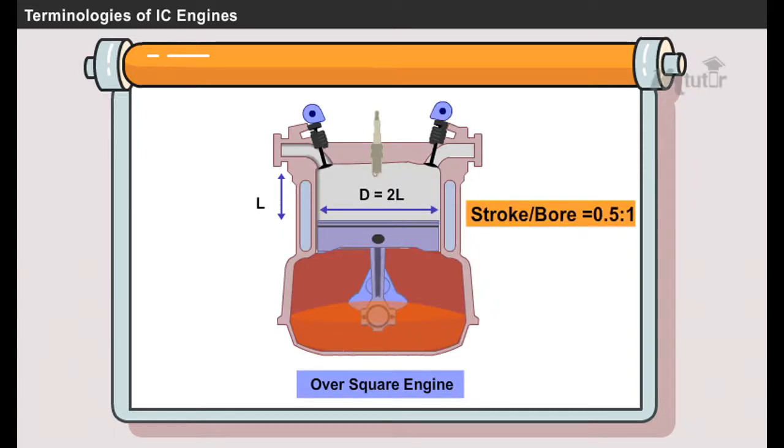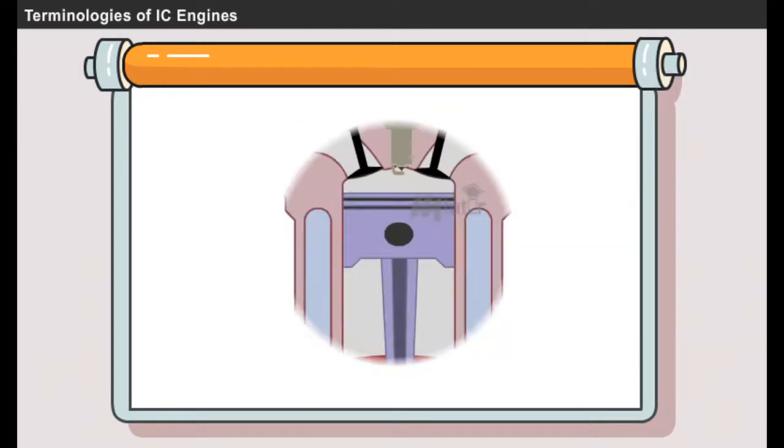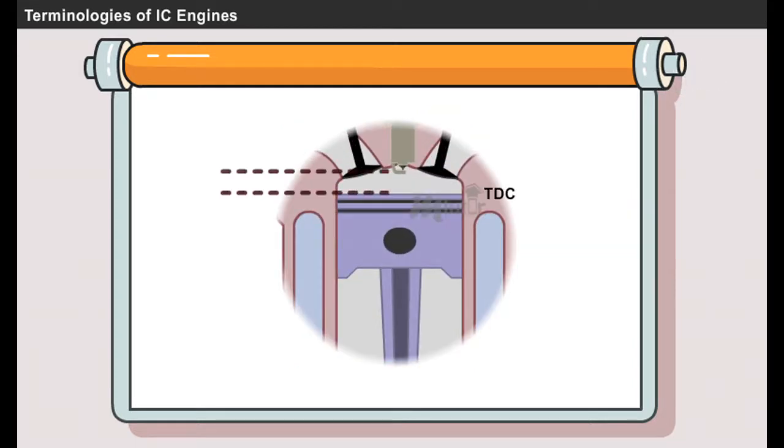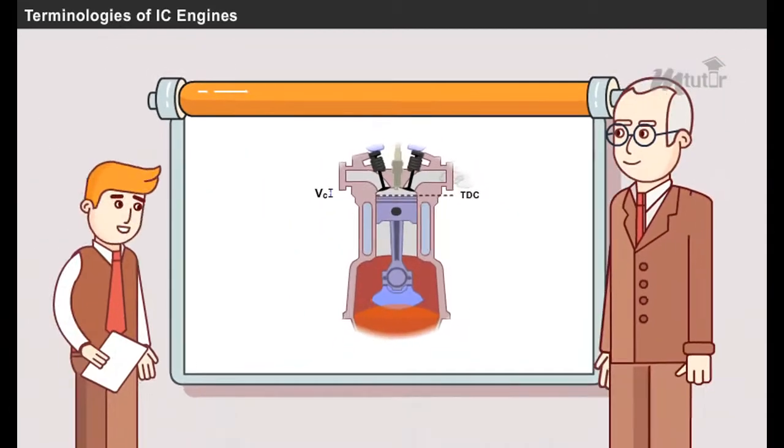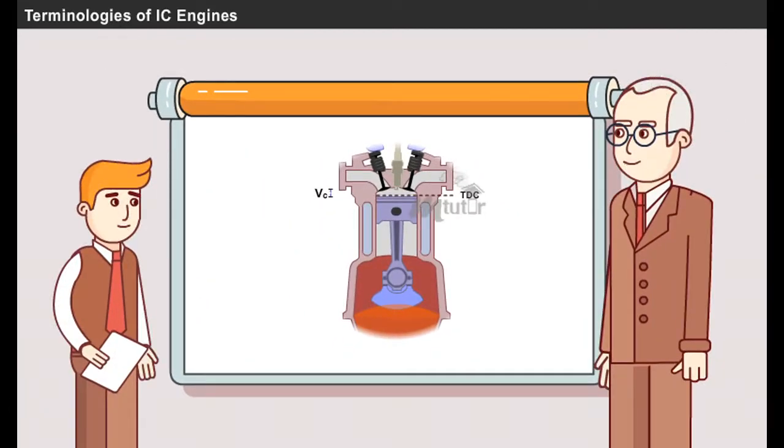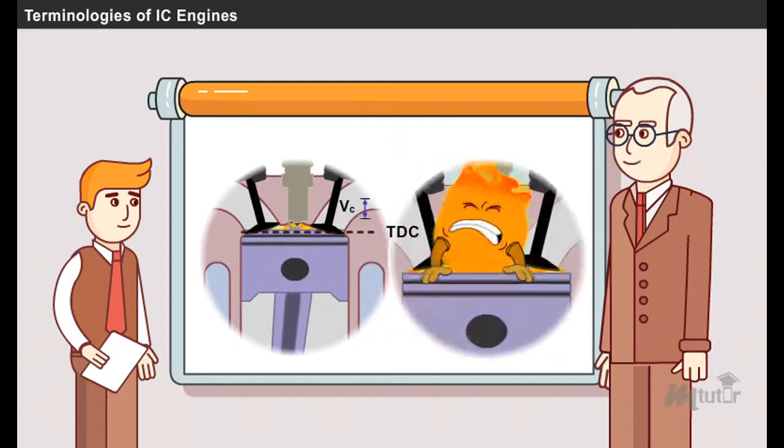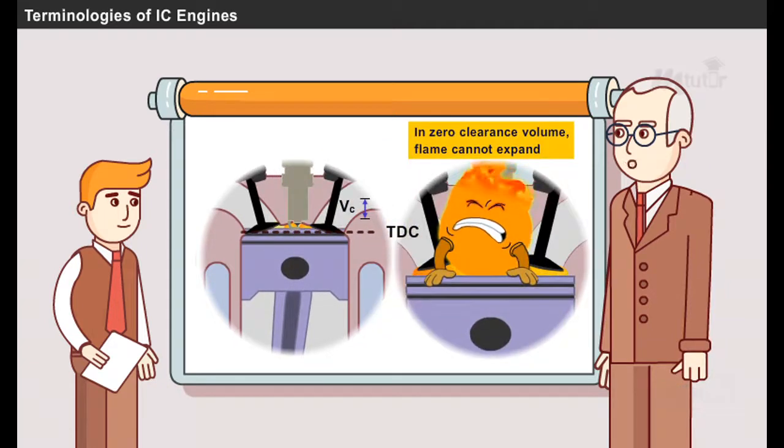Clearance volume: when the piston is at top dead center, the volume contained in the cylinder above the top of the piston is called as clearance volume. But sir, why can't we move the piston up to the extreme top? That is a good question. Zero clearance volume is not recommended because if it doesn't have a clearance volume, it is difficult for the flame to expand. Hence the flame needs a minimum space for the expansion.